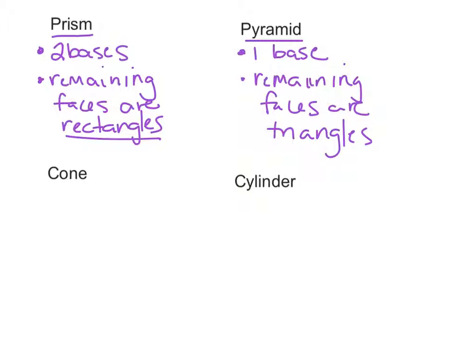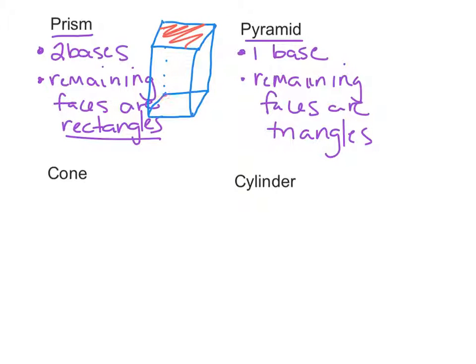I'm going to go ahead and sketch some pictures so you can actually see what these would look like. So a prism would look kind of like this. The two bases — this would be a base and this would be a base — and the bases are parallel to each other, and they're the exact same size and shape.